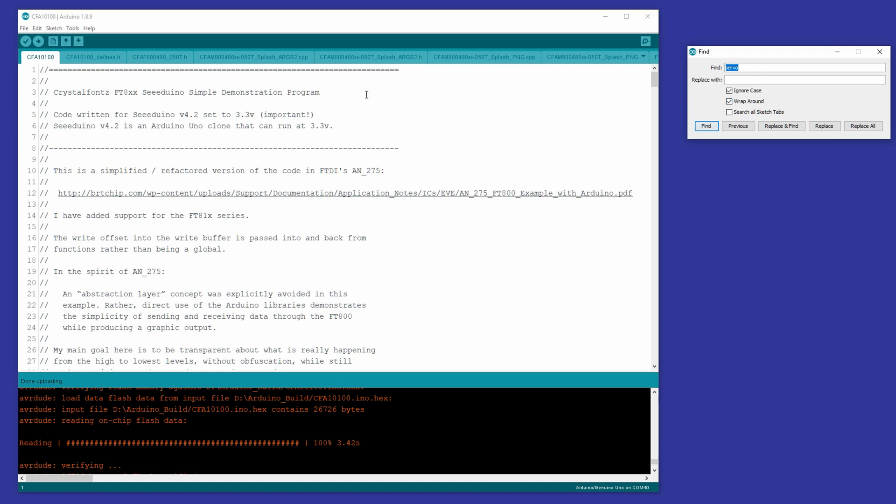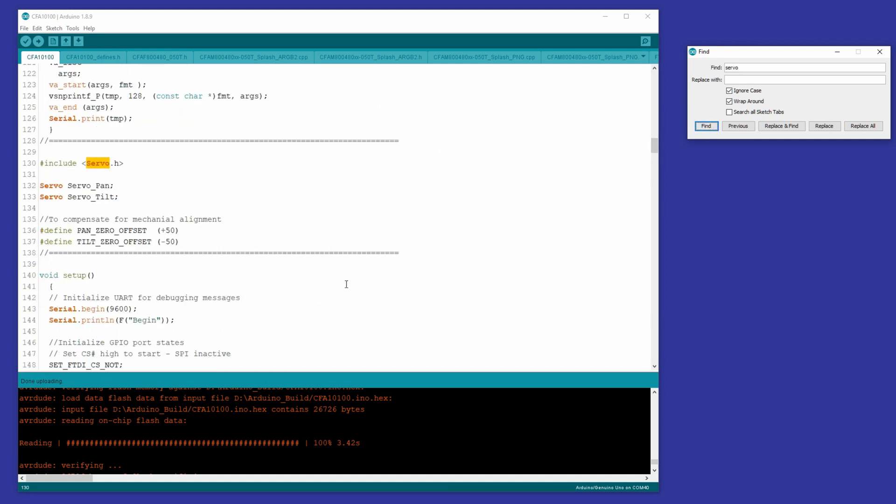And this is the code, rockstock, straight from the website, straight from the GitHub repository. And I've already made the changes in here, and they're tagged with servo, so I'm just going to be able to search through servo to find the changes.